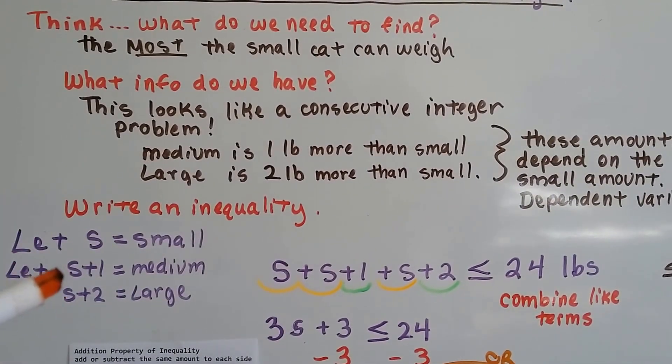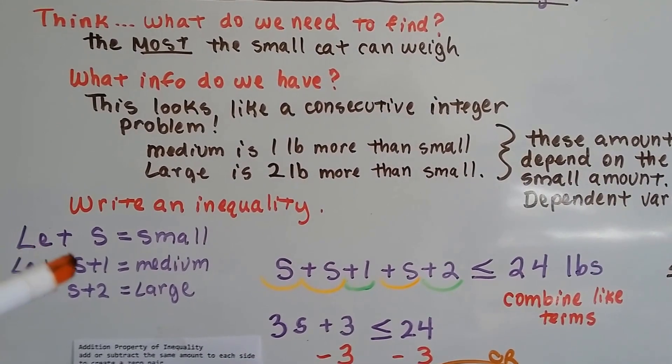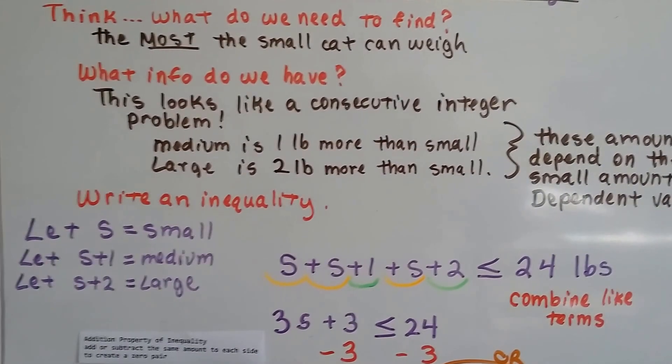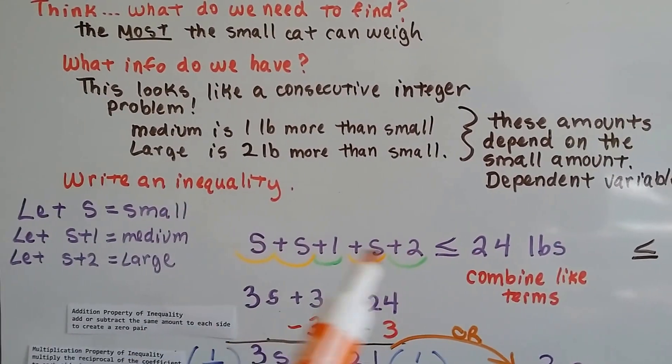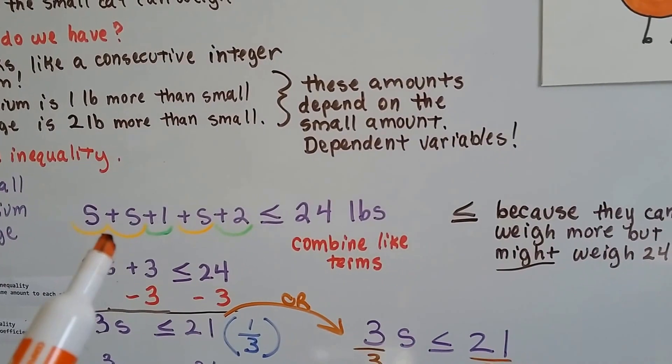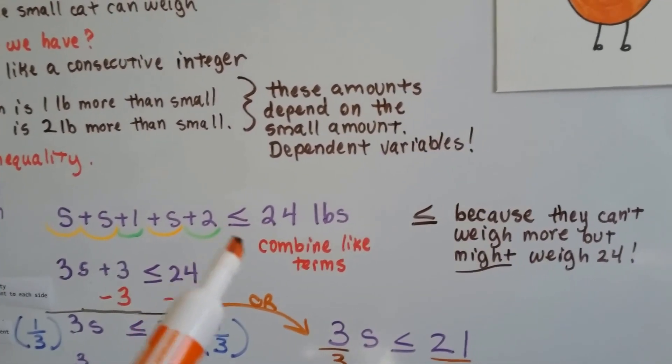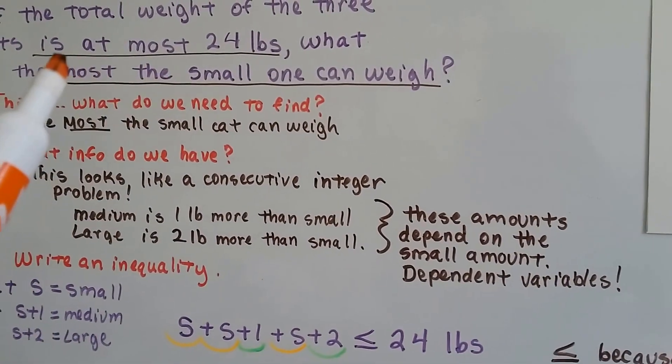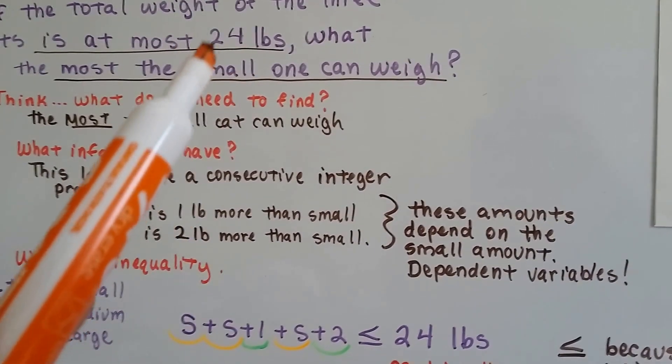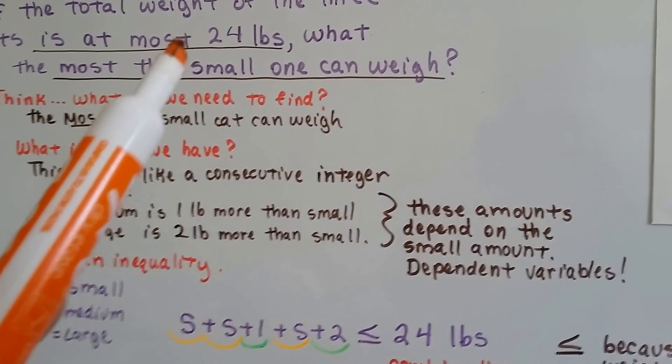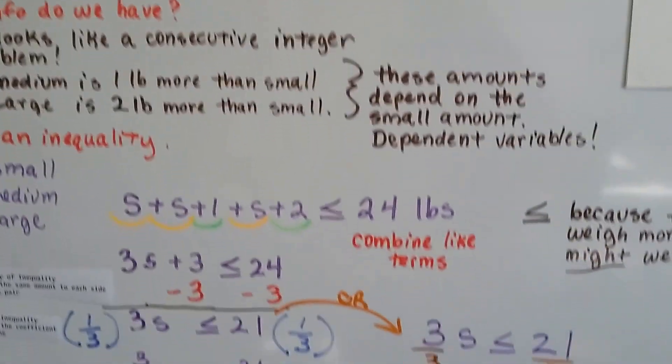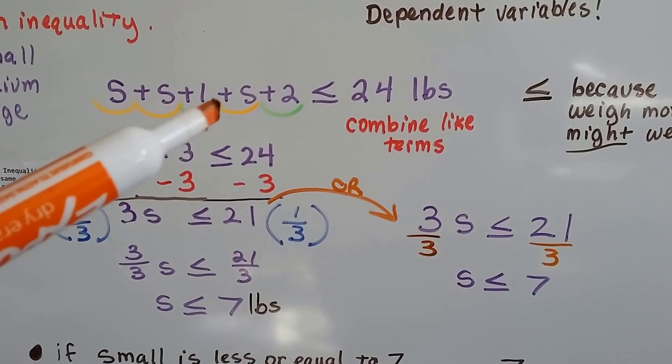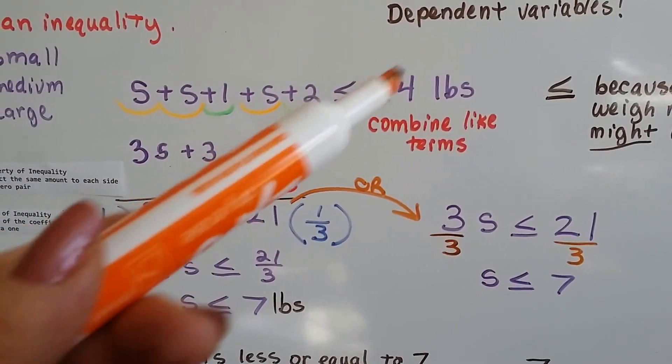So, we can write an inequality using the fact that these are dependent variables. S can be the small one, and because the medium one depends on the small one to be 1 pound more, it could be small plus 1. The large one depends on the small one, because it's 2 pounds more, so it's small plus 2. We've got our consecutive integer problem. Now, we put a less than or equal sign, because they can't weigh more than 24 pounds, but they might weigh 24 pounds. It's at most 24 pounds. So, it could weigh 24, but not any more than that, because that's the most. That's the cutoff. Now, we need to find out how much the small one is, so now we can write this as the small one plus the medium one, which is small plus 1, and the large one, small plus 2, is less than or equal to 24 pounds.